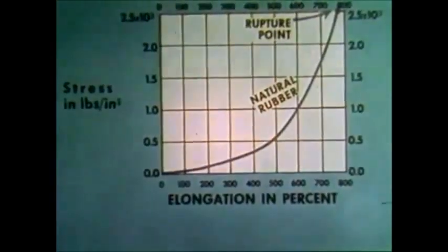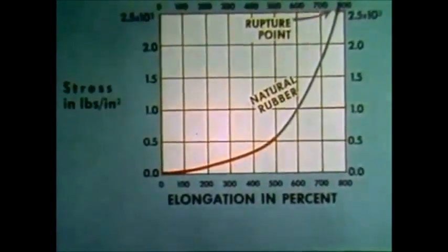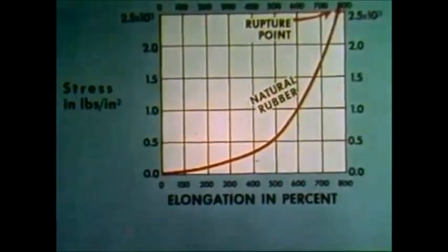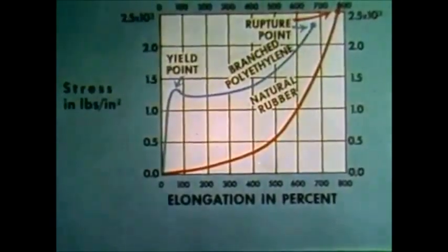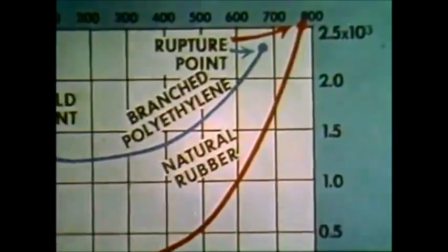Cross-linked rubber is strong, as this tensile test shows. The sample's resistance to stress increases steadily up to the point of rupture. Here is a stress-strain curve. Stress resistance remained quite low up to about 500% elongation, then resistance increased substantially. This second curve is for a branched polyethylene. The tensile strength of the rubber just before fracture is actually higher than the plastic.